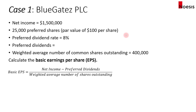For case one, the net income of Blue Gates is $1.5 million. Blue Gates has 25,000 preferred shares outstanding, each with a par value of $100. The preferred dividend rate is 8%. Preferred dividends will be calculated shortly. The weighted average number of common shares outstanding is 400,000 at the beginning of the fiscal year. We will calculate the basic earnings per share using the formula: net income minus preferred dividends divided by the weighted average number of shares outstanding.